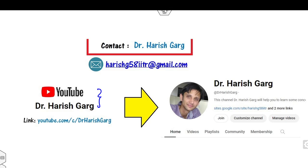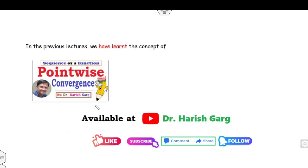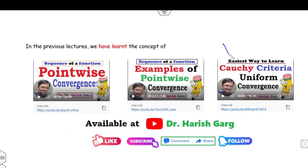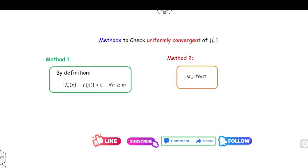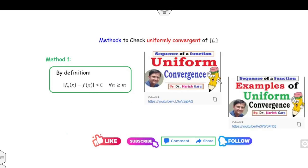In our last lectures we covered the topic of pointwise convergence, the Cauchy criteria, and various examples of pointwise convergence — all available under my real analysis playlist. Apart from those, we described two methods to check whether a sequence of functions fn is uniformly convergent: the first method is by using the definition, which we already learned through examples of uniform convergence.